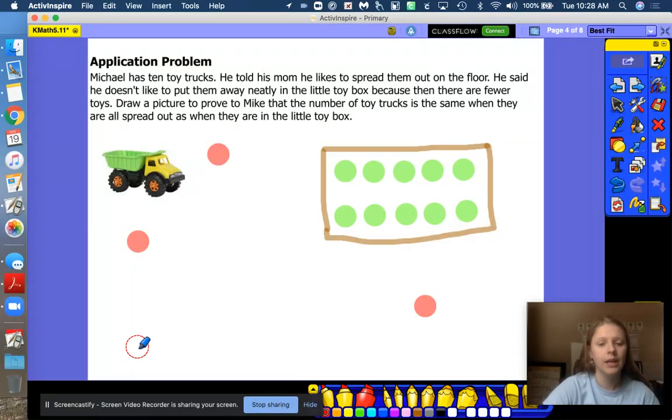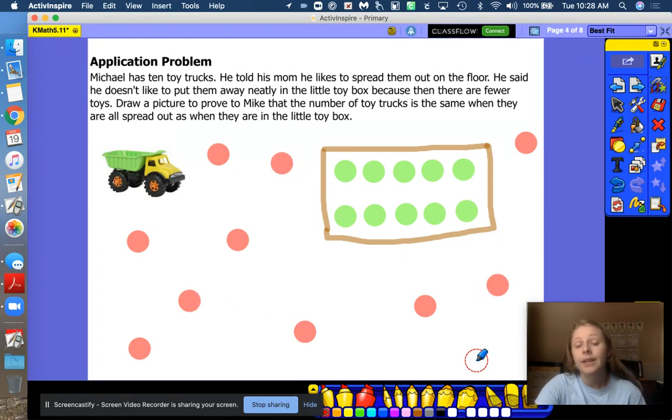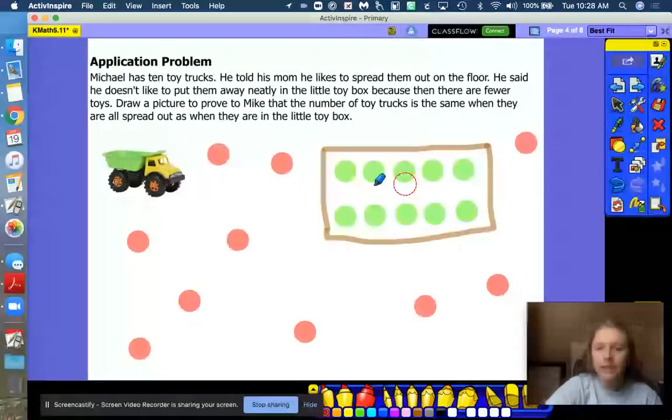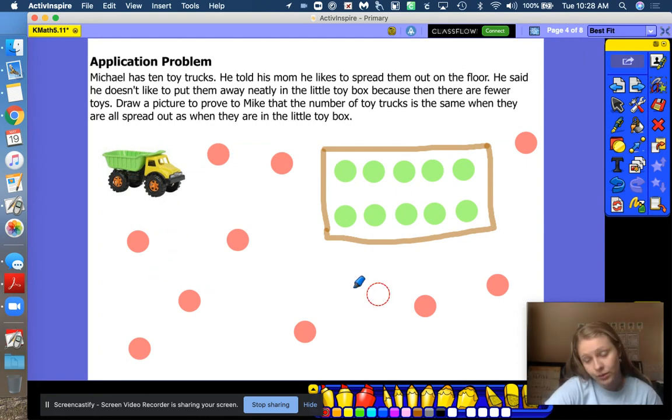1, 2, 3, 4, 5, 6, 7, 8, 9, 10. Does he still have 10 toy trucks, the red ones, even though they're all spread out? Yeah. He still has 10. It's a lot harder to count them because they're all over the place. But no matter if they're neatly in his chest or strewn out on the floor, he only has 10 of those trucks.